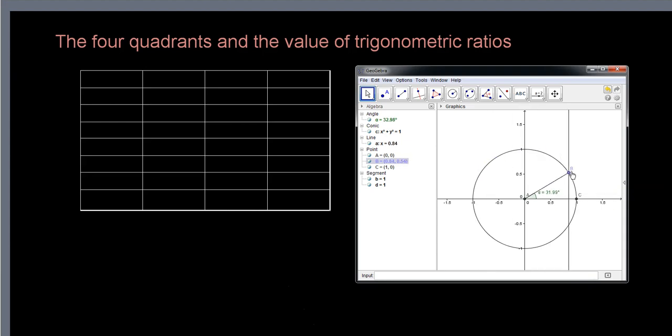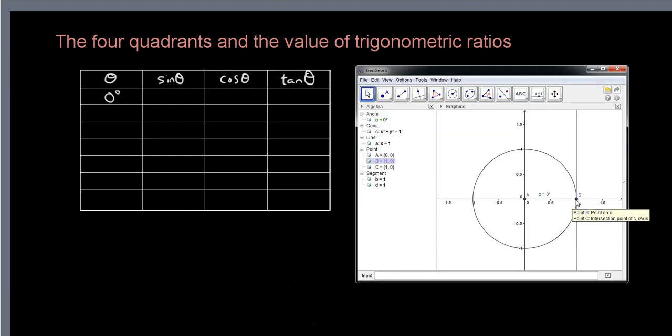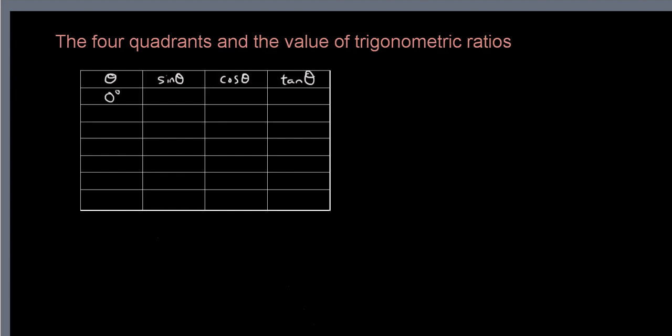Right, let's firstly talk about the original point B, which is when theta is equal to 0 degrees. So when theta equals 0 degrees, what is the sine value, what is the cosine value, and what is the tangent value? When theta is located at 0, if you look vertically at the y coordinate of point B, let me just write that down here.